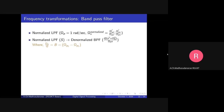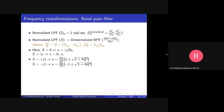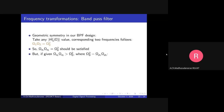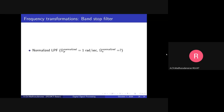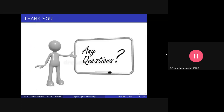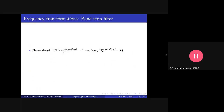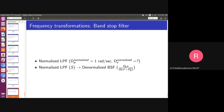With Omega S1 dash and Omega S2 dash, you can proceed with the band pass filter design: first design the normalized low pass filter with these specifications, then substitute S with the band pass transformation expression. The same approach can be applied for the band stop filter. Thank you.